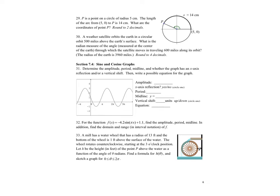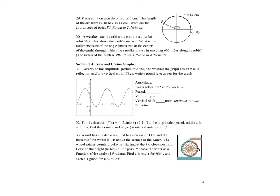Alright, last page. So we have a point in the circle of radius 5 centimeters. The length of the arc is 14. What are the coordinates of point P rounded to 2 decimals? And so what I can do then is I know that this distance here is the, so there's my 5.